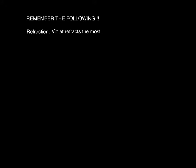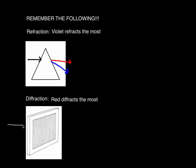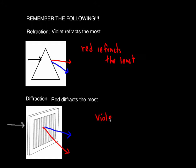This leads to a very important rule to memorize. For refraction, violet refracts the most. So if white light comes into a prism, red will refract at an angle, but at much less of an angle than the higher-energy wavelengths like blue and violet. For diffraction, red diffracts the most. So if white light travels through a diffraction grating, red light diffracts at a much greater angle than higher-energy wavelengths such as blue and violet. For refraction, red refracts the least; for diffraction, violet diffracts the least.